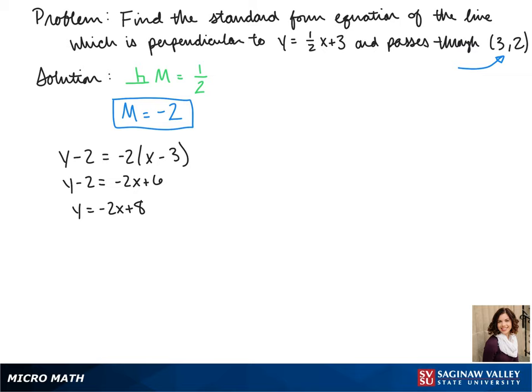So this is our line in slope-intercept form, but the question asks for it in standard form. Our standard form has both variables on the same side and a positive x. So we move our 2x to the other side, and our equation is 2x plus y equals 8.